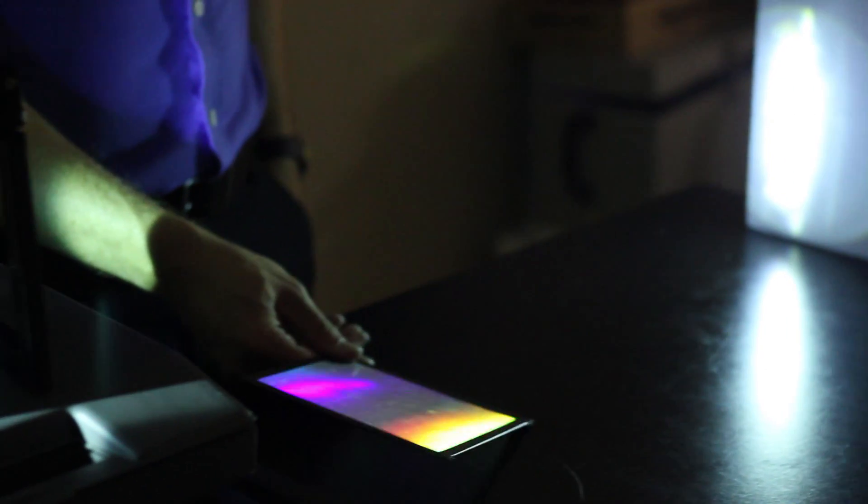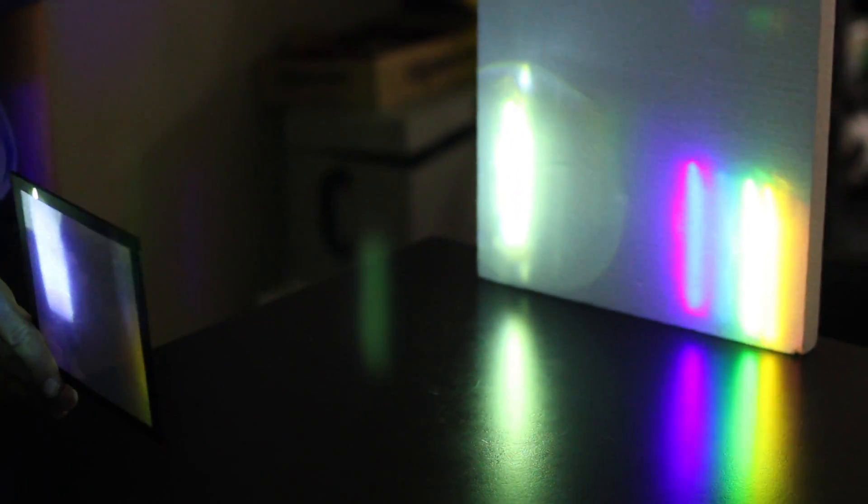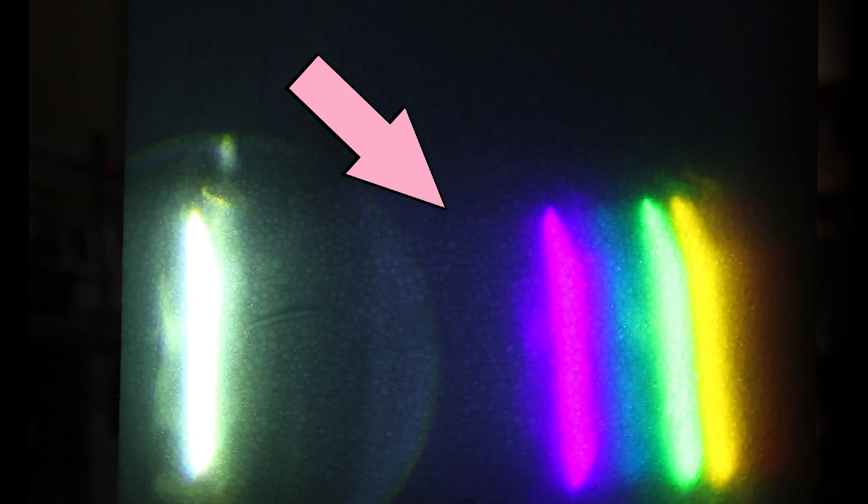This is the mercury spectrum. I'm projecting it onto a piece of styrofoam. The ultraviolet light is normally invisible, but this piece of paper fluoresces to show where the ultraviolet lines are. This is the experiment that first convinced me that ultraviolet light was real.